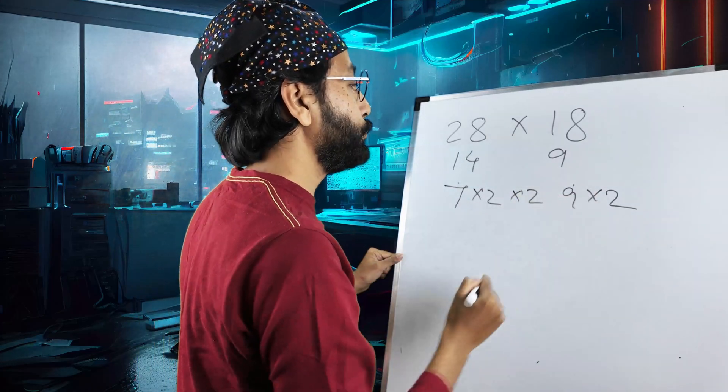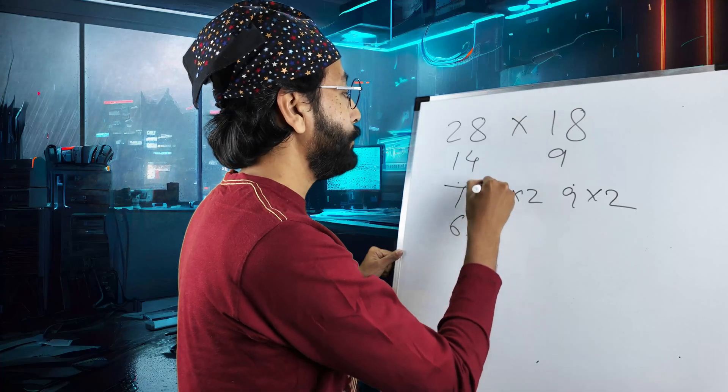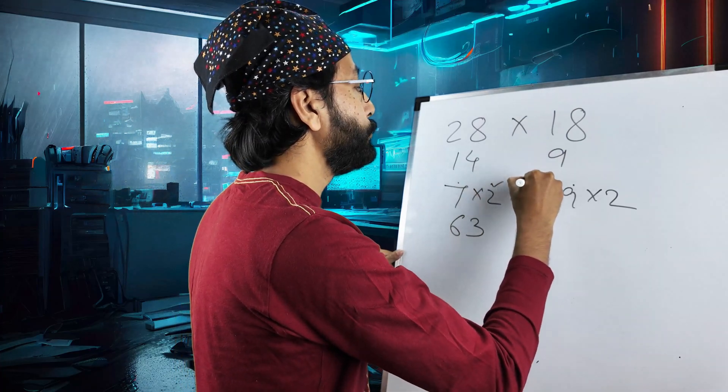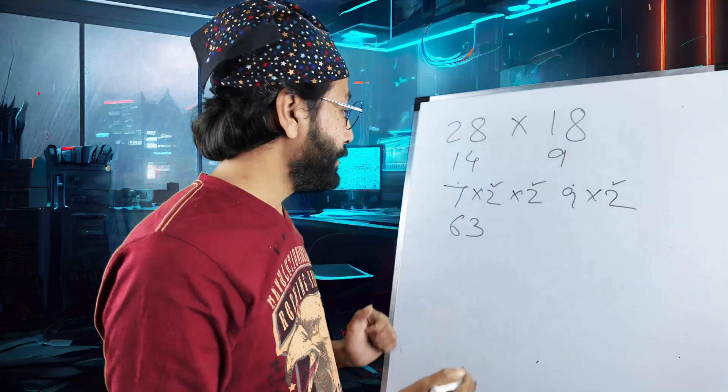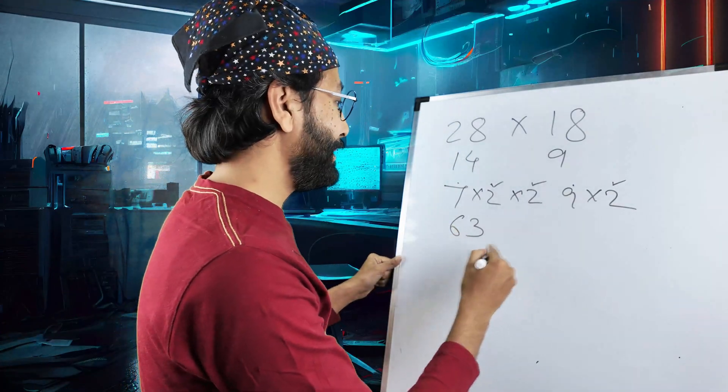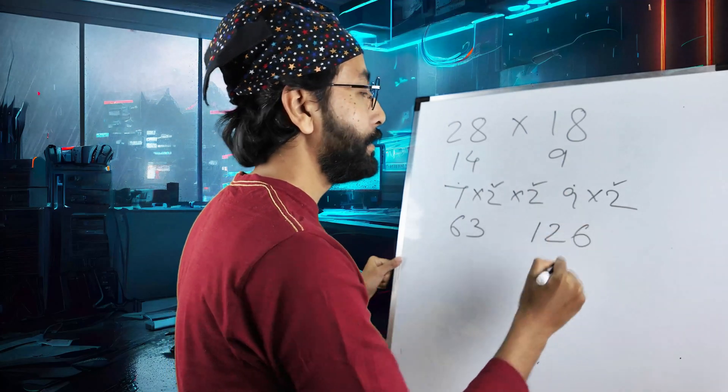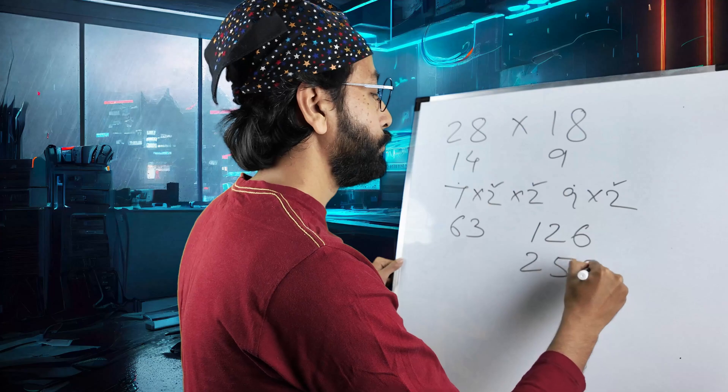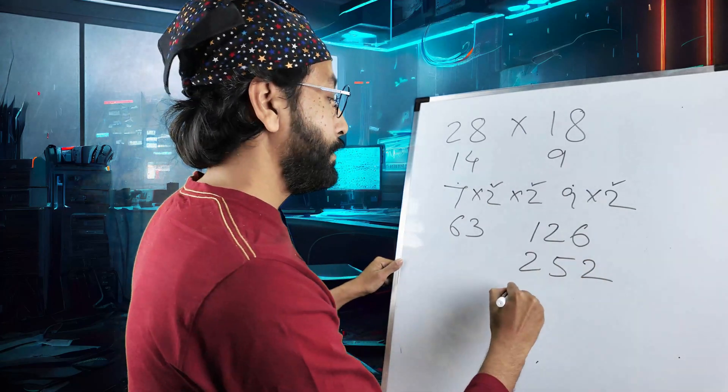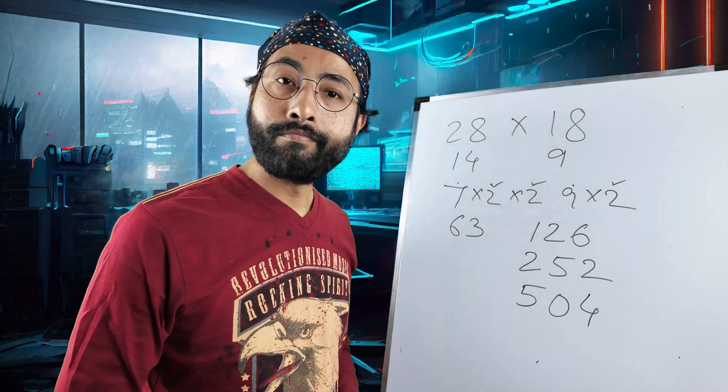So, we'll take this 2, 9 and 7. That is 63. And 1, 2, and 3 times double. Can we do it? Yeah, definitely. Double of 63 is 126, right? That means 252, right? 504. Simple?